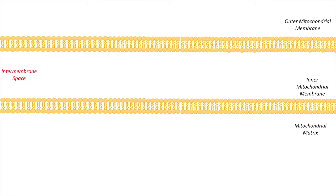If we think about the mitochondria, the mitochondria is a double-membraned organelle. It has an outer mitochondrial membrane and an inner mitochondrial membrane, and deep within the mitochondria is the mitochondrial matrix. In between the two mitochondrial membranes is the intermembrane space.